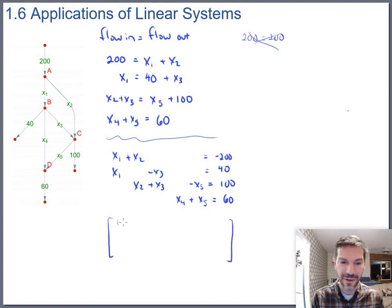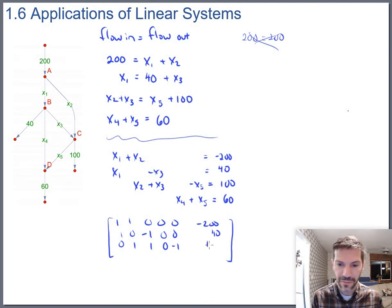So that's more of the form where we're ready to write an augmented matrix and dump it into a calculator. So the first row, 1, 1, 0, 0, 0, negative 200. Then 1, 0, negative 1, 0, 0, 40. Next 0, 1, 1, 0, negative 1, 100.